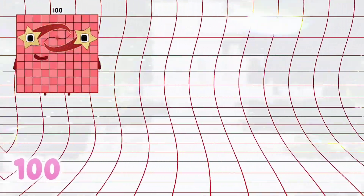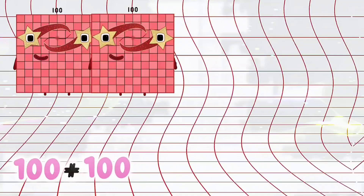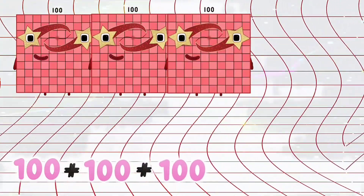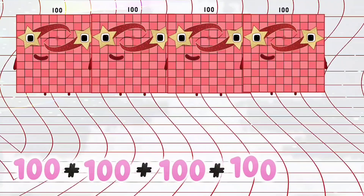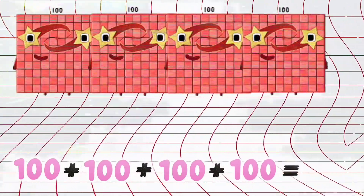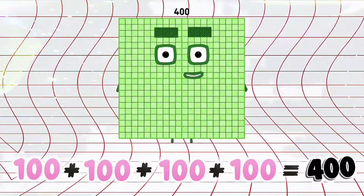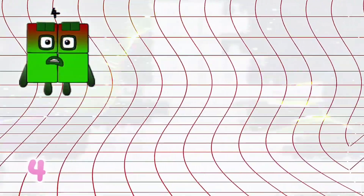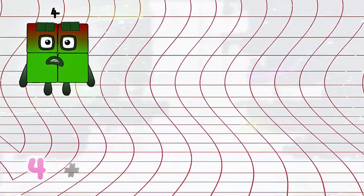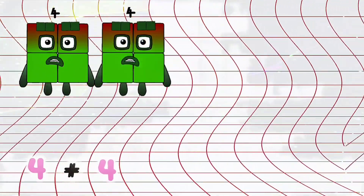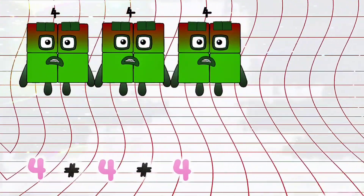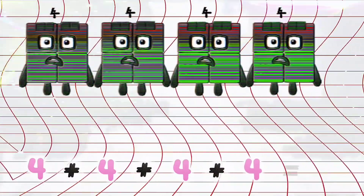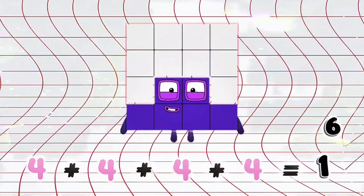100 plus 100 plus 100 plus 100 is equals to 400. 4 plus 4 plus 4 plus 4 is equals to 16.